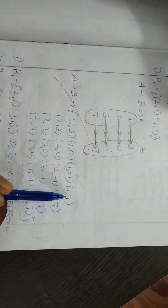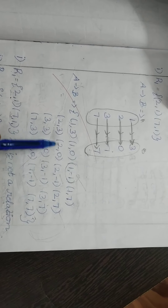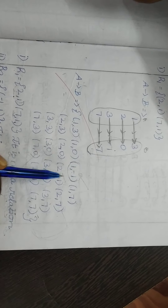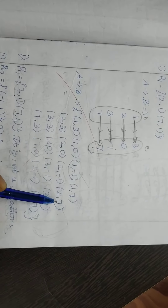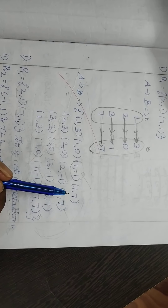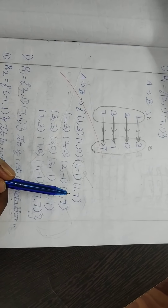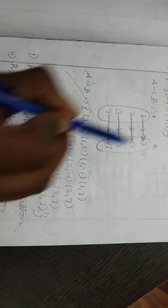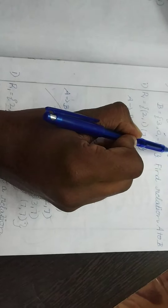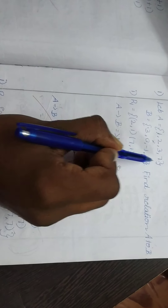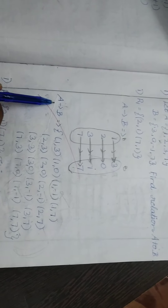Next, 2 elements: (2,3), (2,0), (2,-1), (2,7). Next, 3 elements: (3,3), (3,0), (3,-1), (3,7). Next, 7 elements: (7,3), (7,0), (7,-1), (7,7). So A to B Cartesian product multiply.